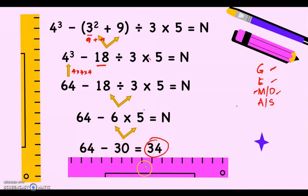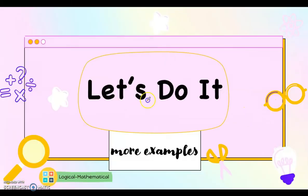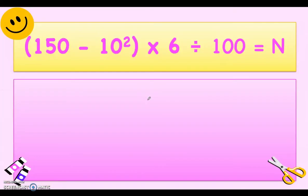Then 64 minus 30 is equal to 34. So this is our final answer. There is no addition; we proceed right away to subtraction. Let's have more examples.